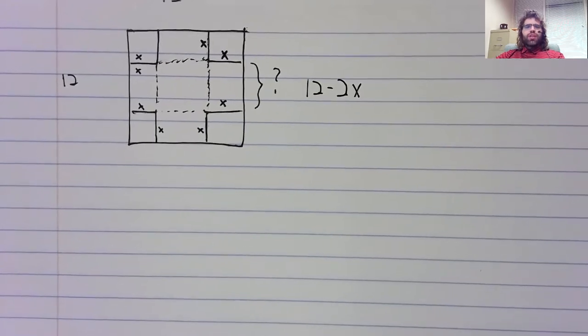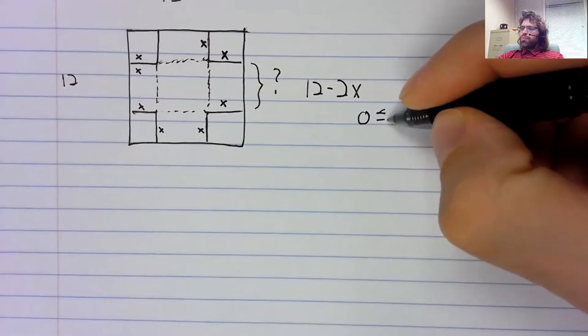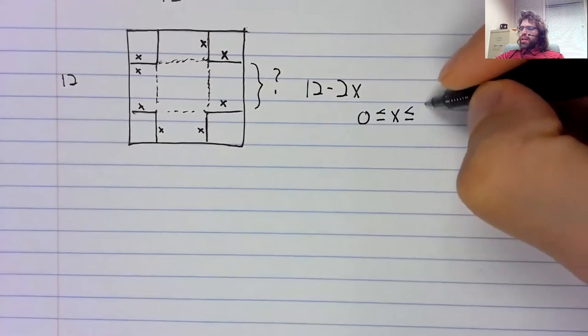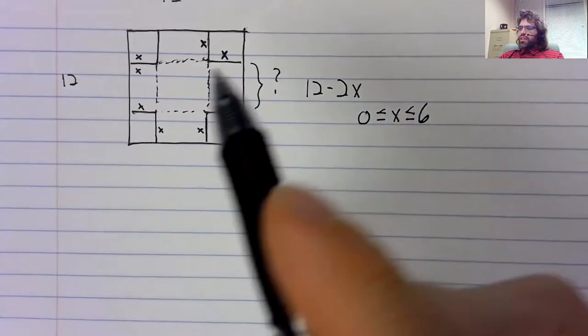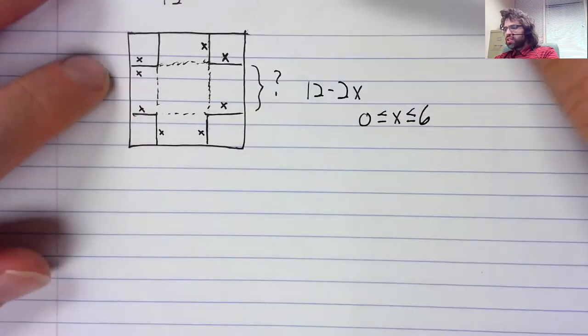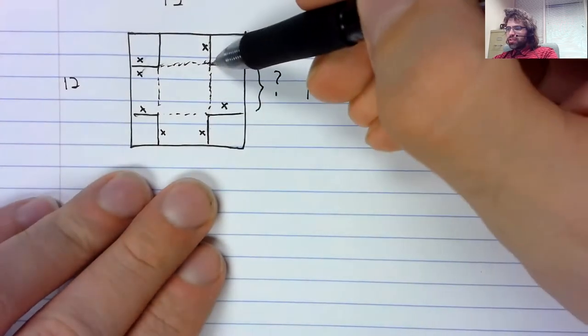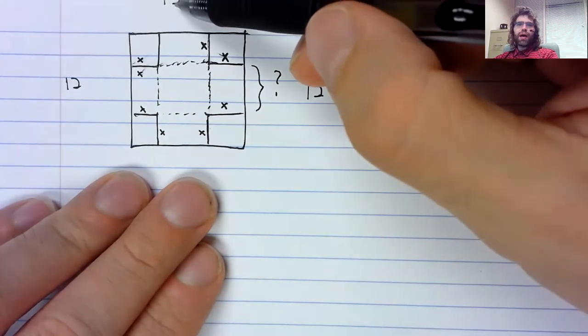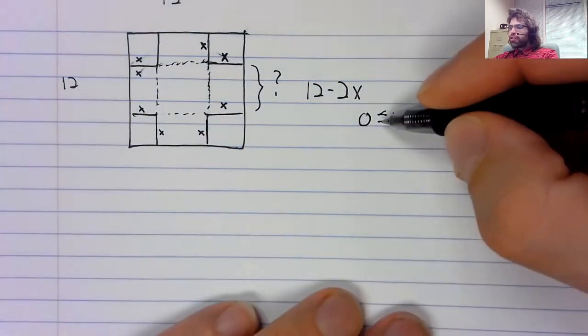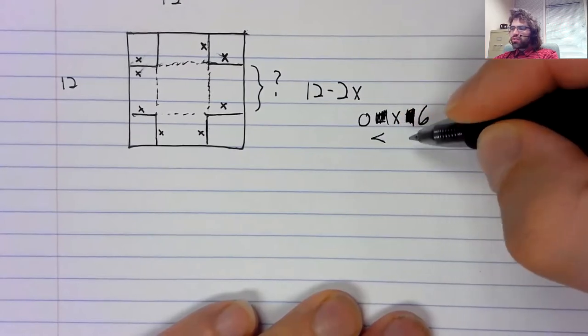And what do we know about x? x is between 0 and 6. Why 6? Well, because 6 would make this x together with this x be 12.